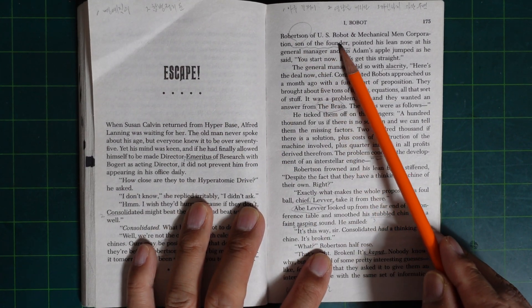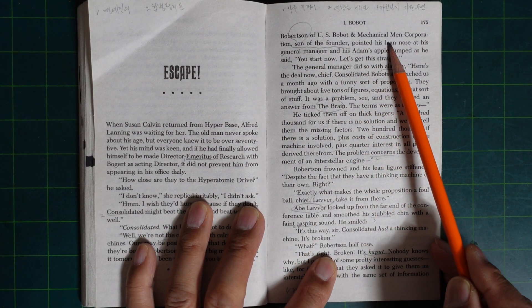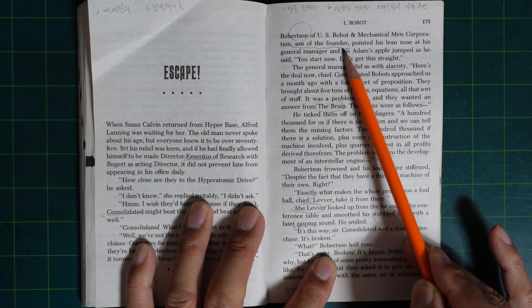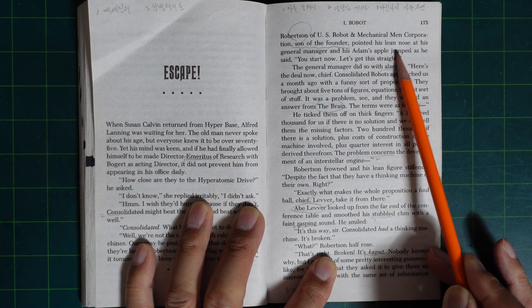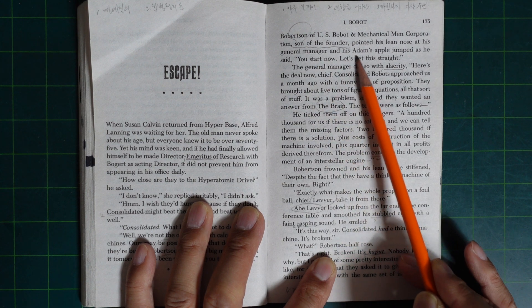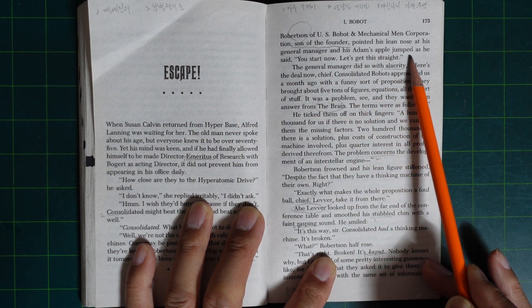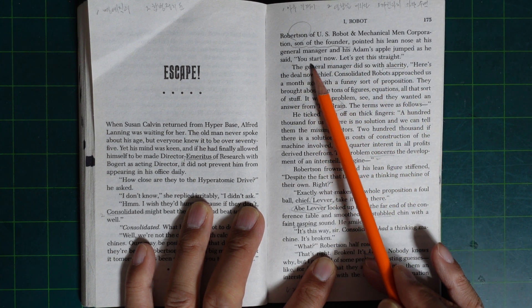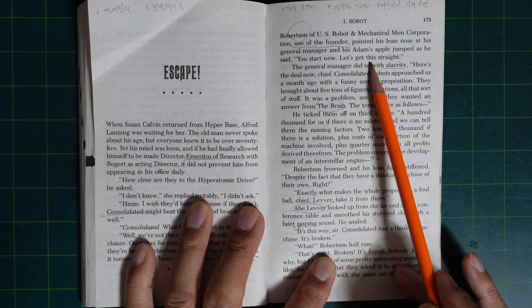Robertson of U.S. Robot and Mechanical Man Corporation, son of the founder, pointed his lean nose at his general manager, and his Adam's apple jumped as he said, Okay, you start now. Let's get this straight.